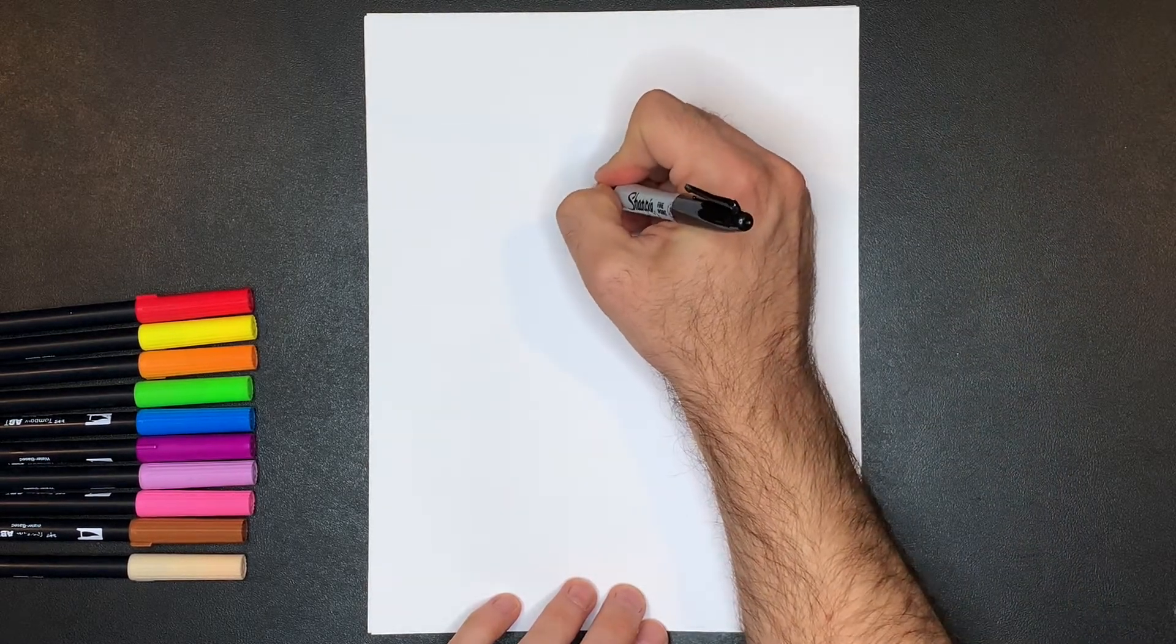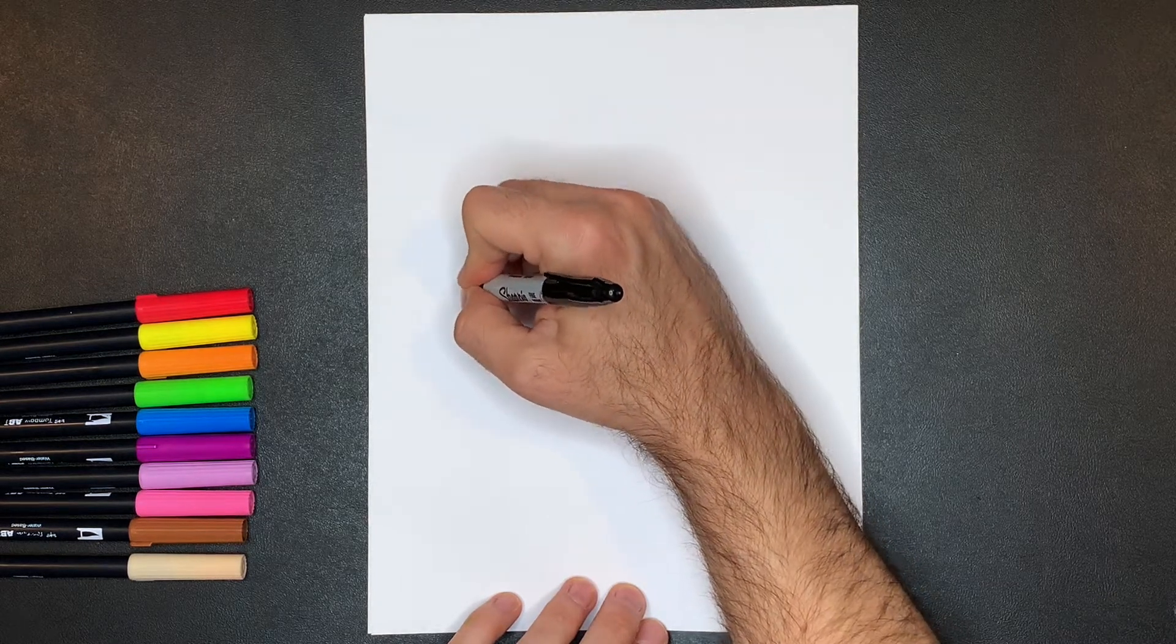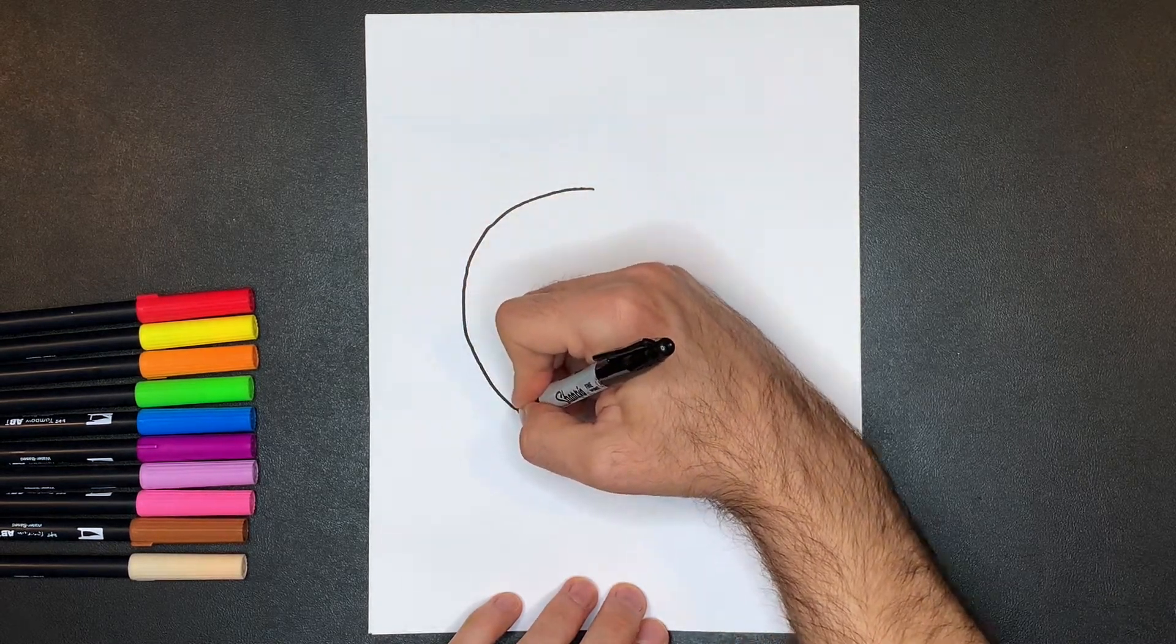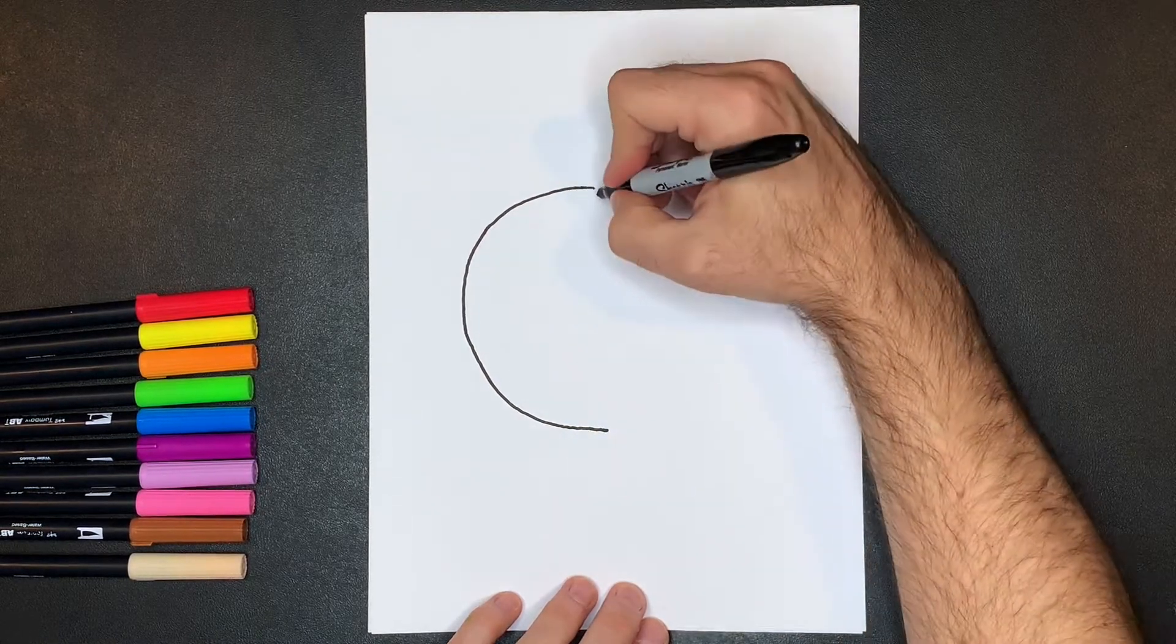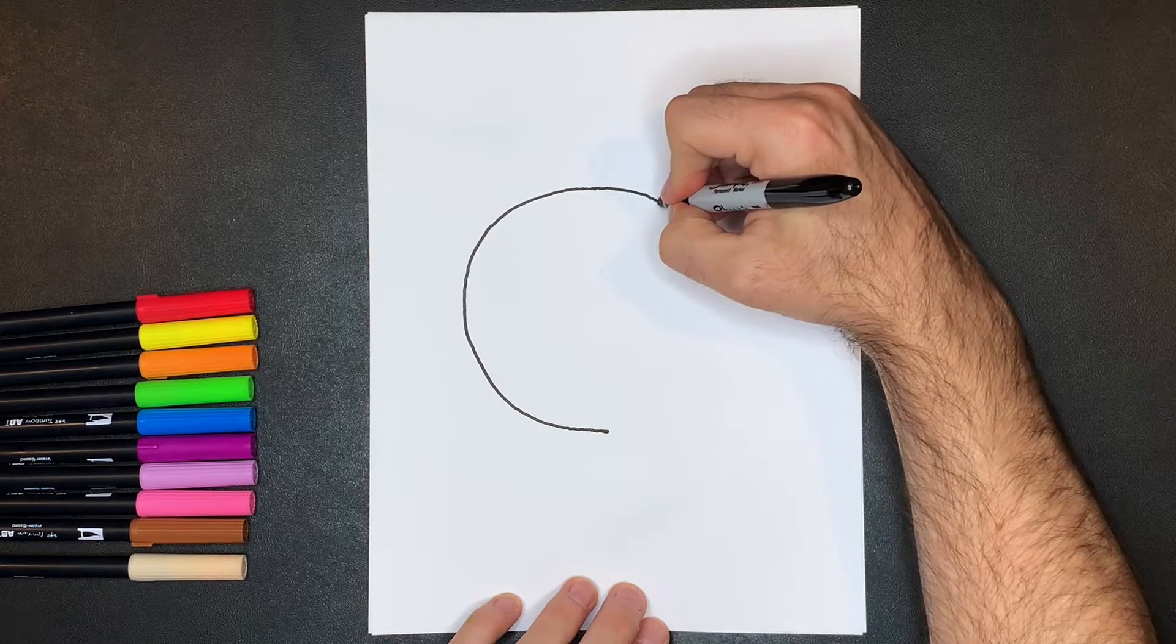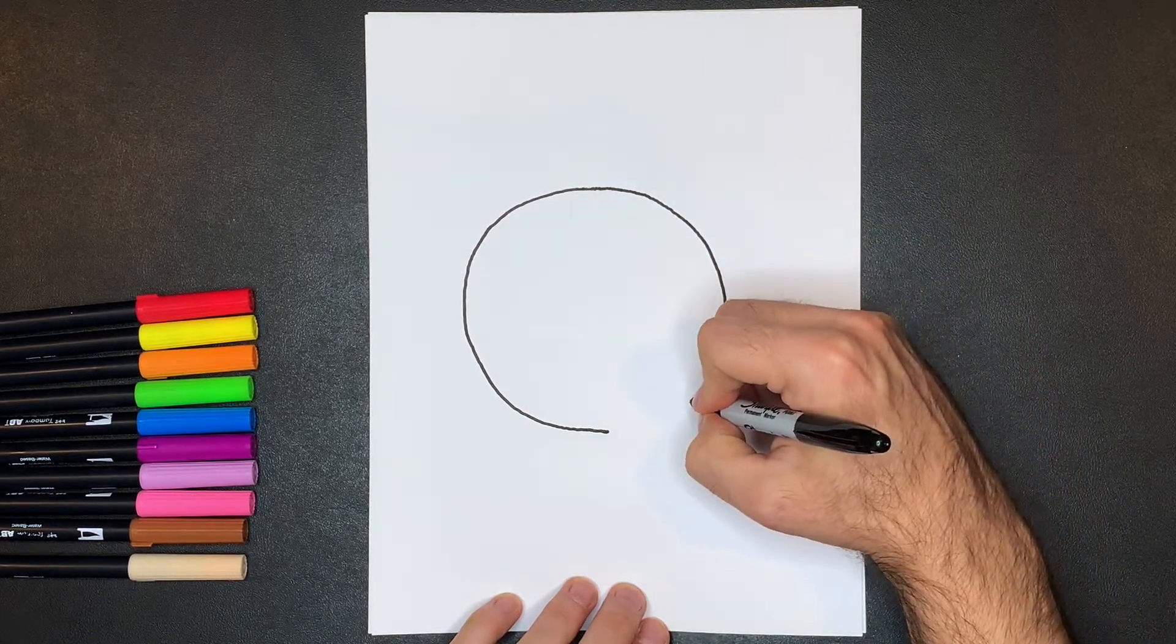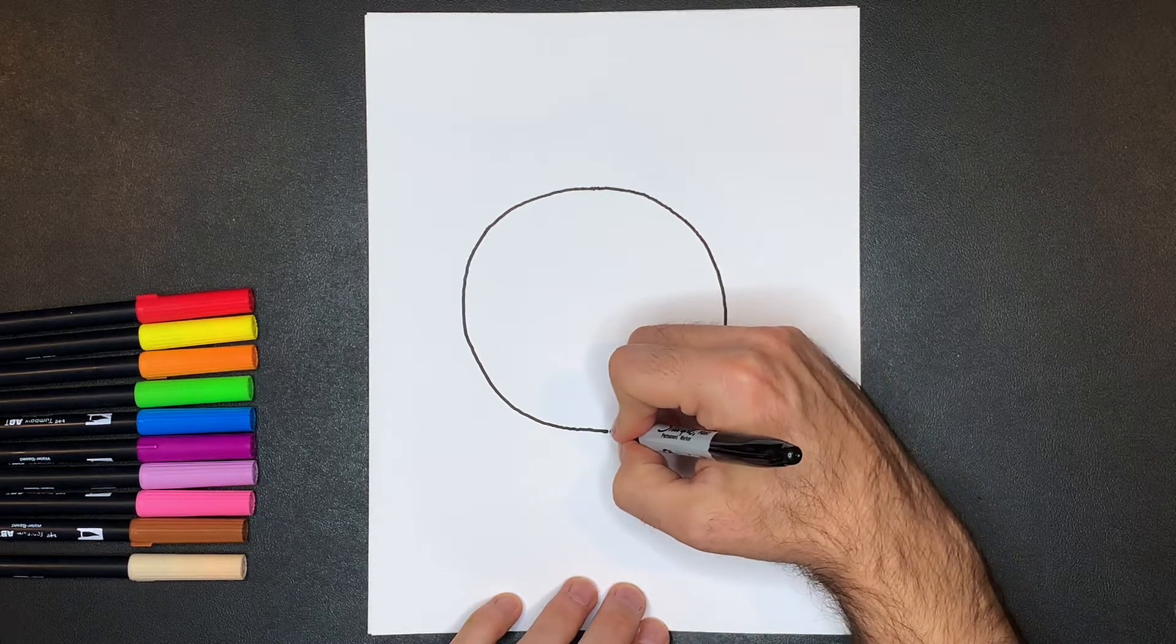So we're going to start right here, we're going to pull that line out around to there, and we're going to pick this line up over here, and pull that around and down into there.